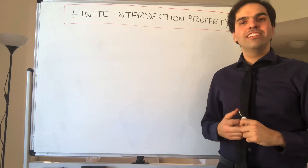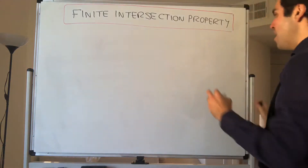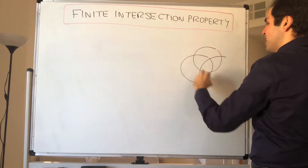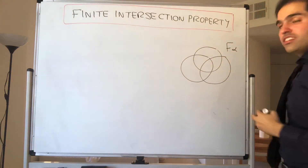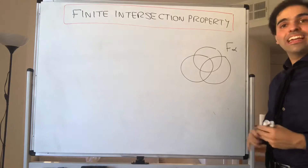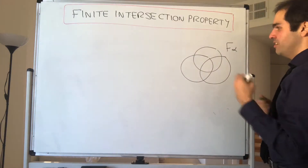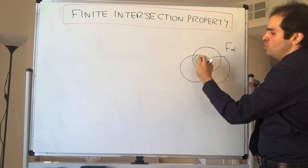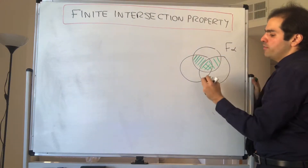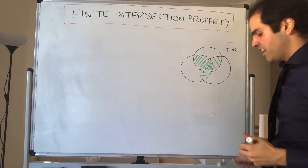It's a very natural generalization of the Cantor intersection theorem. Suppose you have a family of closed subsets with what's called the finite intersection property, which just means that whenever you take the intersection of finitely many of those F-alphas, you have a non-empty intersection. So here, if you take the intersection of two of those F-alphas, you have something non-empty, and here you have something non-empty. That's the finite intersection property.